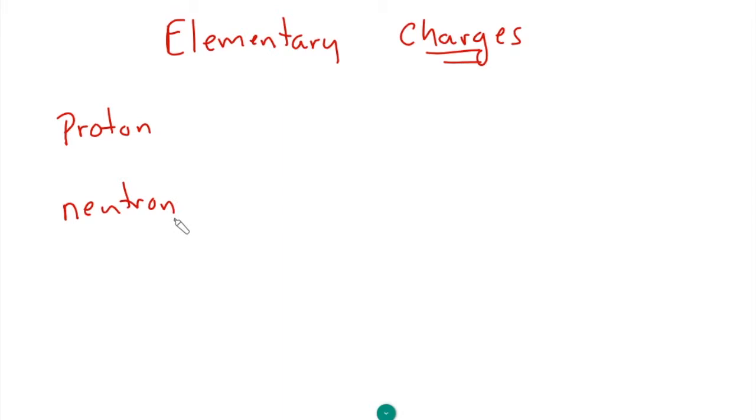But now we hear this term called elementary charges. And what are those? Well, once again, I want to look at the proton, the neutron and the electron. Now we were told throughout our schooling that the charge of a proton was plus one, the charge of a neutron was zero, and the charge of an electron was minus one. Well, in actuality guys, that is not the case. That is not true.